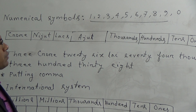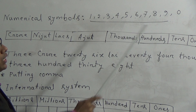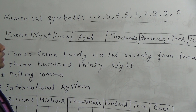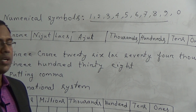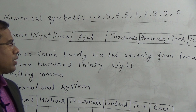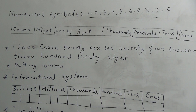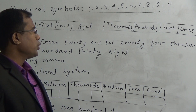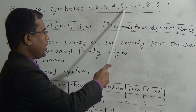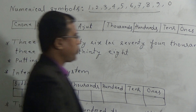Here, the first 9 digits are called significant digits, and the last one is 0. Using these 10 digits, we can express any large number. For expressing 5, we use this symbol. For expressing 8, we use this symbol. Now, if we want to express the number 10, there is no single symbol for expressing 10. So for expressing 10, we have to use 2 digits and put them in 2 places.